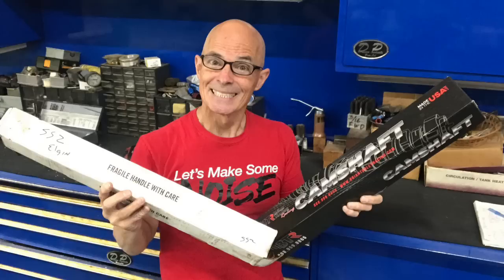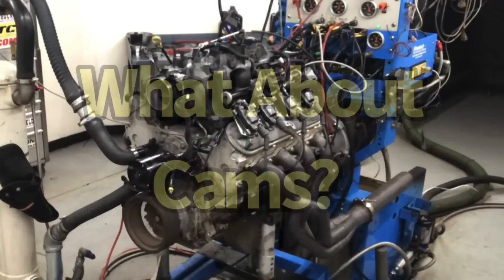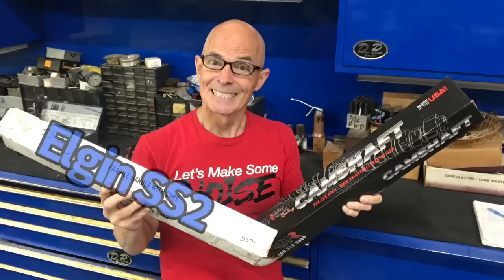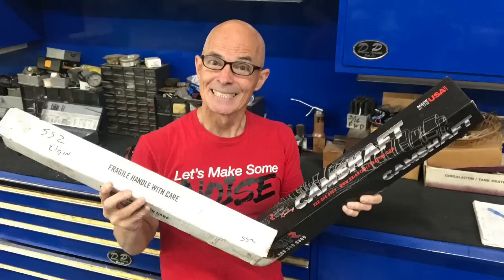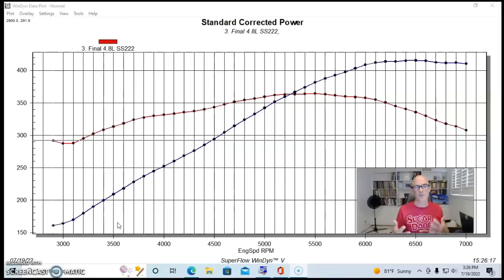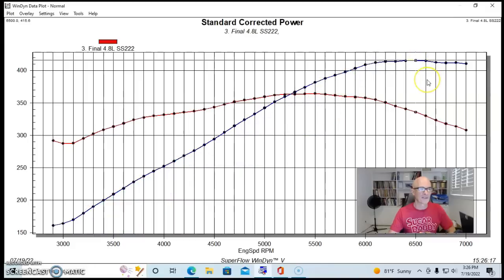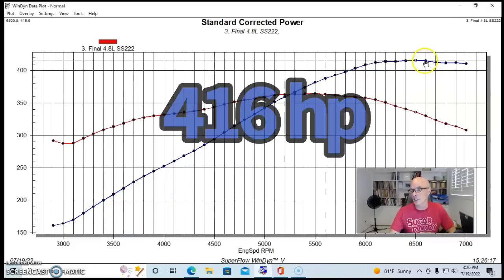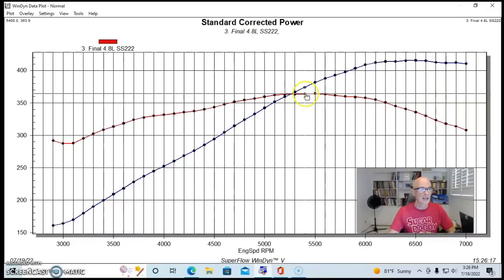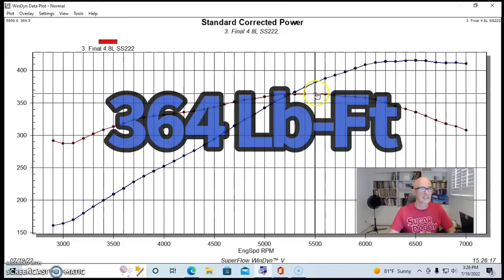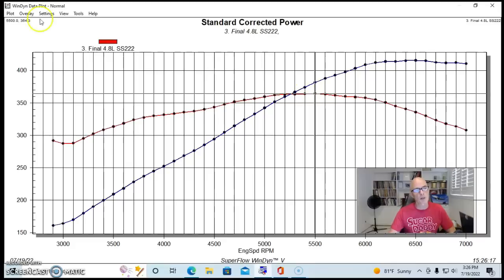Now let's find out what happens when we add camshafts to both. Let's see what happened when we ran a Sloppy Stage 2, a very popular upgrade cam for both, on the 4.8 and the 5.3. This is our 4.8 liter with the Sloppy Stage 2. It produced 415.6 horsepower and 364 foot-pounds of torque.